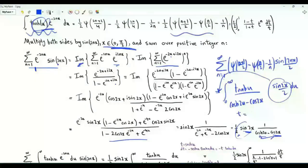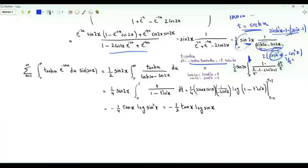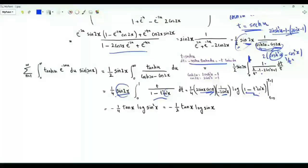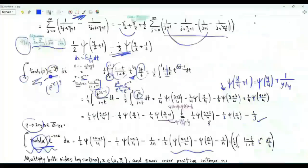Thus Σ_{n≥1} [ψ((n+1/2)) − ψ(n/2) − 1/n] sin(2nx)/2 equals the integral over positive u of tanh(u) sin(2x) / (2(cosh(2u)−cos(2x))). Changing variables to t = sech(u) and simplifying, we find this equals −(1/2)tan(x) log sin(x). Multiplying both sides by −2 gives the series representation: tan(x) log sin(x) = Σ_{n≥1} [1/n + ψ(n/2) − ψ((n+1)/2)] sin(2nx).